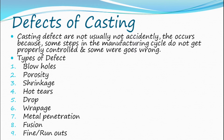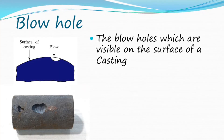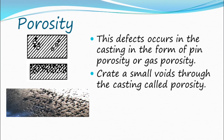Defects of casting: casting defects are not usually accidental — they occur because some steps in the manufacturing cycle do not get properly controlled and something goes wrong. Types of defects include: blow holes, porosity, shrinkage, hot tears, drop, warpage, metal penetration, fusion, and fin runouts. Blow holes are voids which are visible on the surface of the casting. Porosity defects occur in the form of pin porosity or gas porosity, creating small voids throughout the casting.